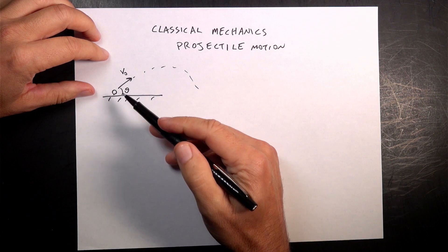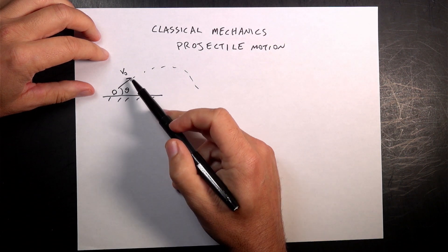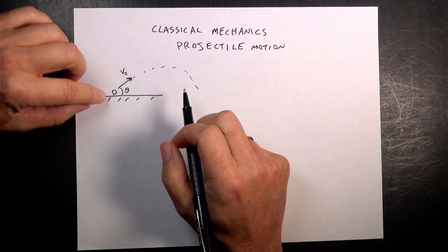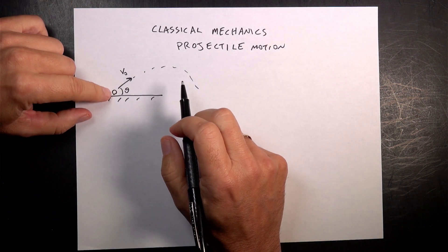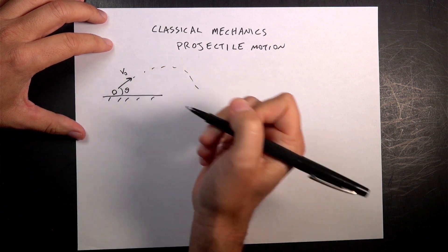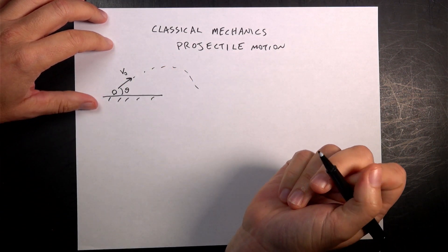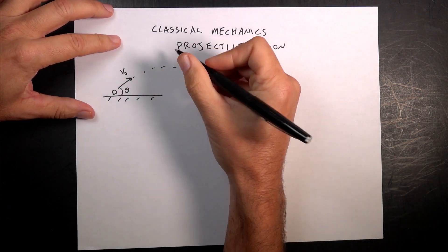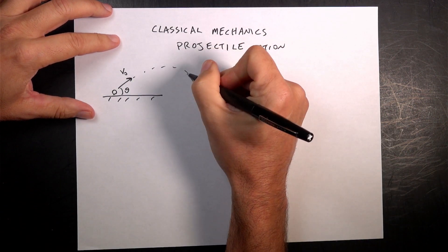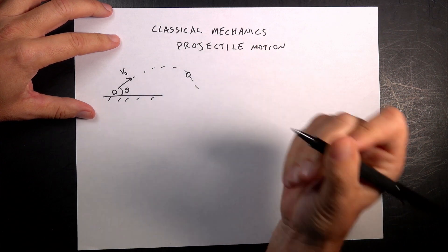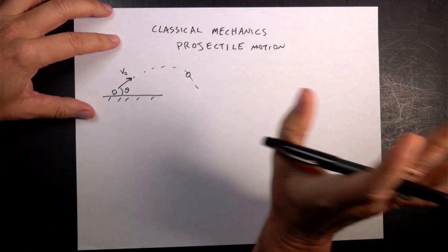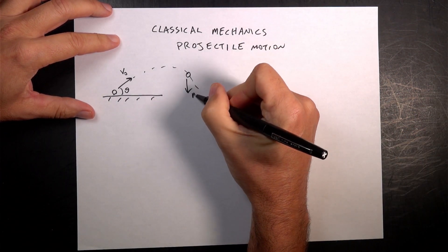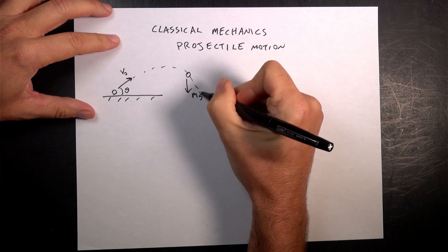So here I have some ball. I launch it at some angle theta with initial velocity v, and I start at a position x0, y0. Once it's in the air, we're going to assume no air resistance — I only have this downward gravitational force mg.